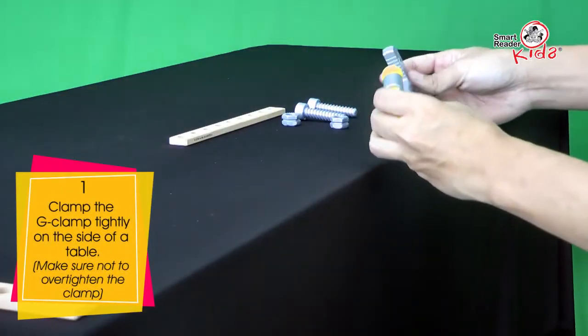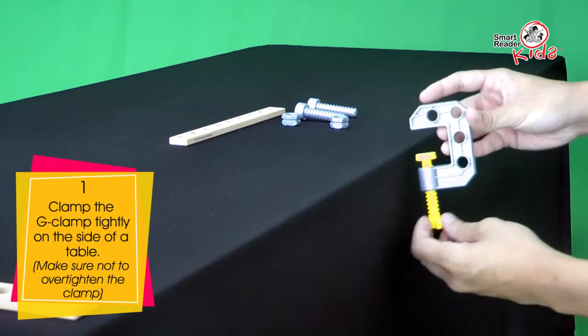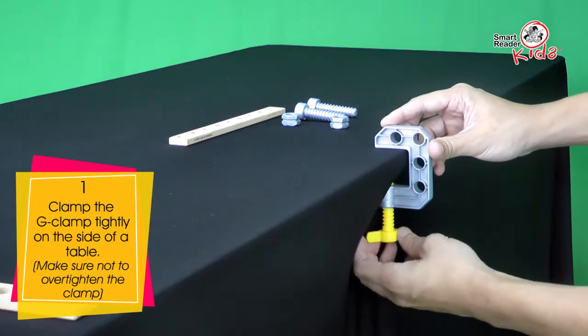Clamp the G-clamp tightly on the side of a table. Make sure not to overtighten the clamp.